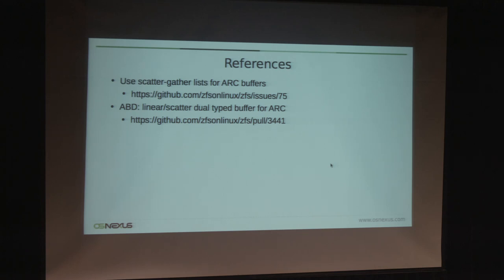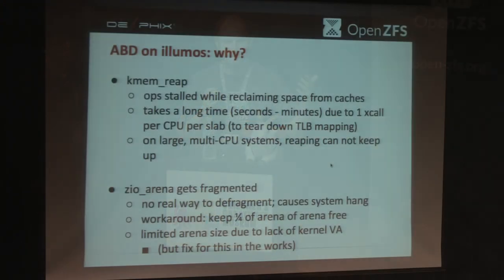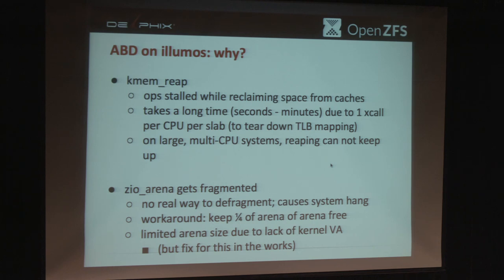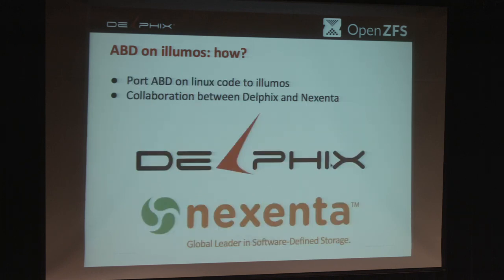Now handing off to Matt. We're a little short on time so I'll try to be brief. We have most, if not all, of the same problems that David mentioned on Illumos as well. If you've ever seen KMEM reap go completely insane, that's the equivalent — it has to evict things and change which KMEM cache to allocate from. Another problem is the ZIO arena, the kernel virtual address space used to cache things in the ARC, can get fragmented with no real way to defragment it. The solution is to just port David's code from Linux to Illumos; we're working with Delphix and Nexenta in collaboration with David on this.